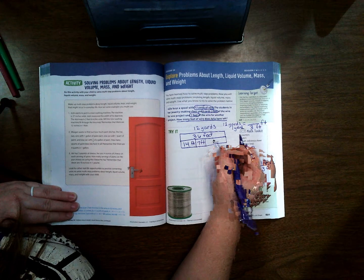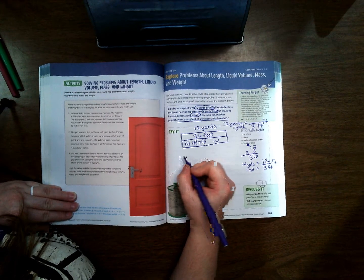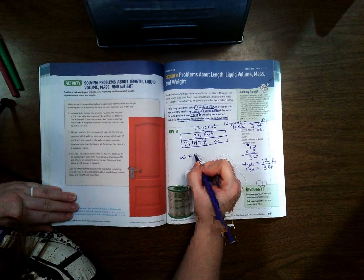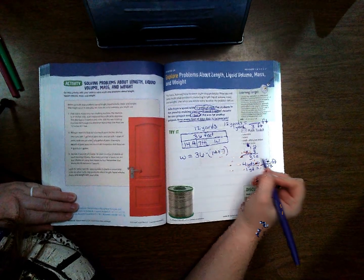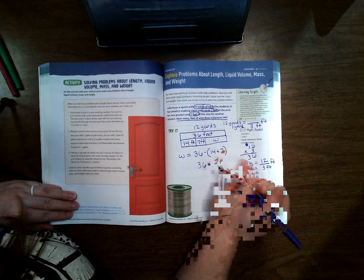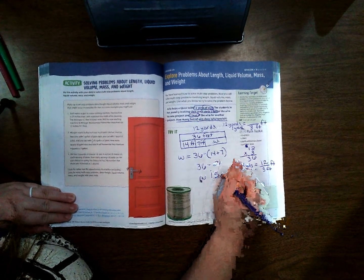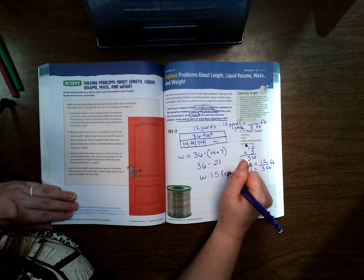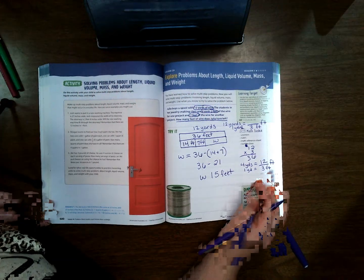So how much is left? So this is the amount of wire that is left. So let's use our equation. The amount of wire left is W equals 36 minus 14 plus 7. Okay, so 14 plus 7 is 21. 36 minus 21 is 15, so she has 15 feet left of wire.